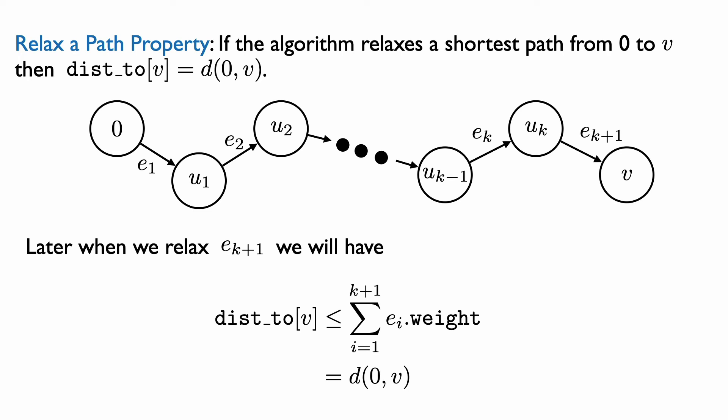By invariant 1, we know that dis2[v] is always at least the distance from 0 to v. This new inequality shows dis2[v] is at most the distance from 0 to v. Together, these imply dis2[v] equals the distance from 0 to v. By invariant 2, after relaxing this path, the edge2 array encodes a shortest path from vertex 0 to vertex v.